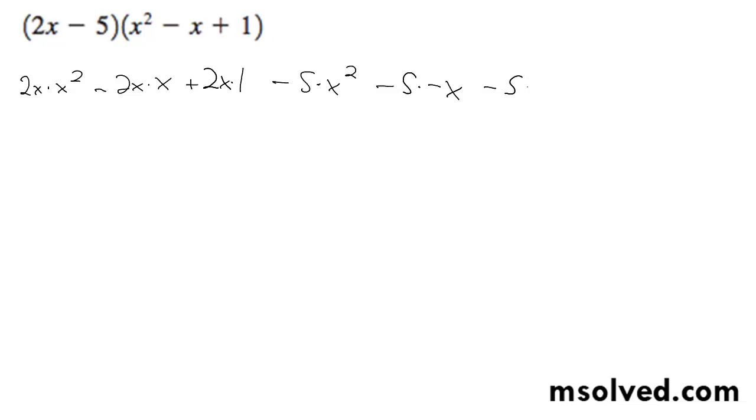and then minus 5 times 1. So this becomes 2x cubed minus 2x squared plus 2x minus 5x squared plus 5x, and then minus 5.